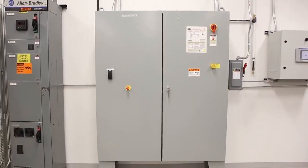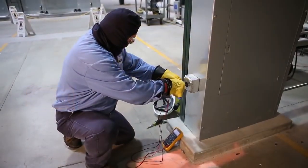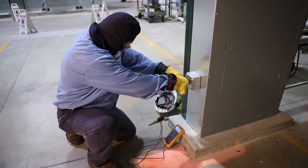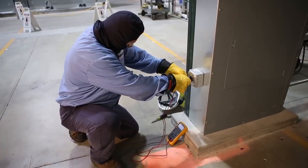Varisafe is an absence of voltage tester or AVT. This patent-pending device tests for the absence of voltage on electrical equipment. Varisafe conducts the same test procedure required by NFPA 70E to verify that equipment is electrically safe to work on.